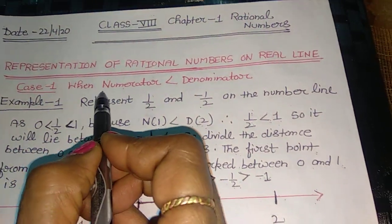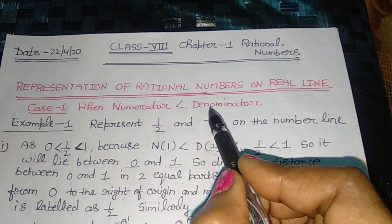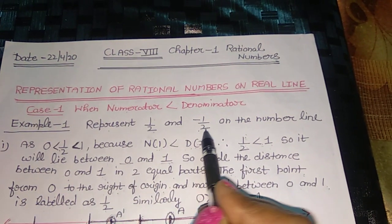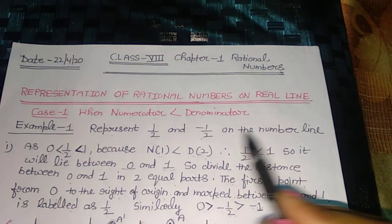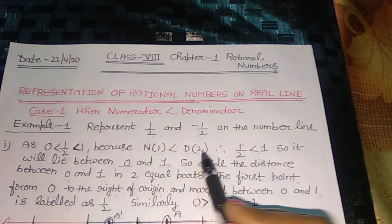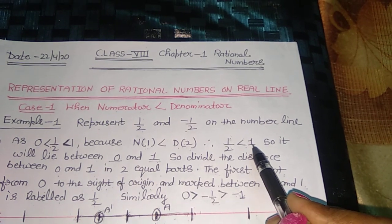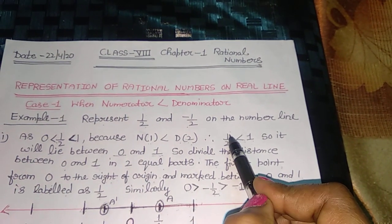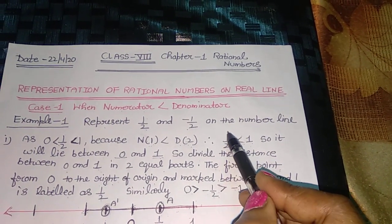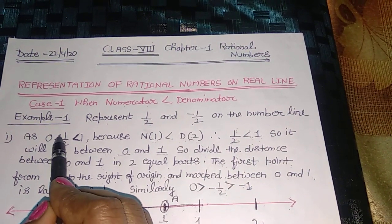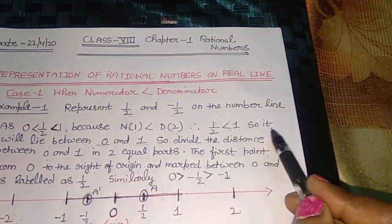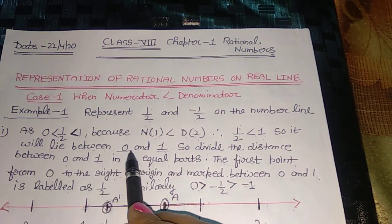Case one: when the numerator is less than the denominator. For example, you have to represent 1/2 and minus 1/2 on the number line. In 1/2, the numerator 1 is less than the denominator 2. Therefore, 1/2 is less than 1, because all rational numbers in which the numerator is less than the denominator are less than 1. Also, 1/2 is a positive rational number, so it is greater than 0. Therefore, 1/2 is greater than 0 and less than 1, meaning it will lie between 0 and 1.